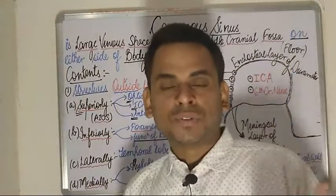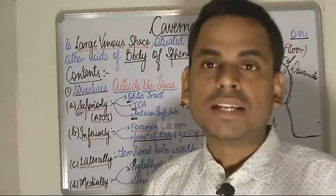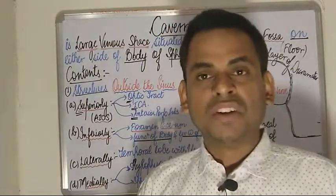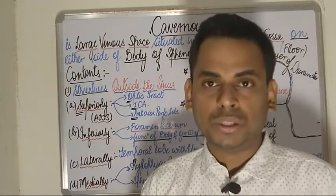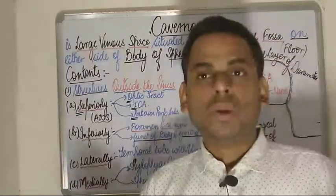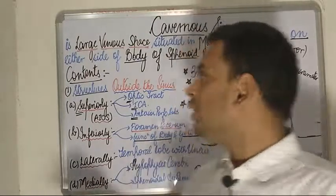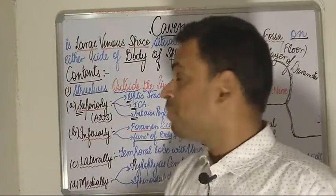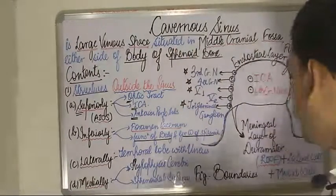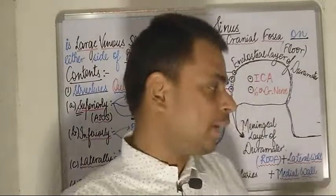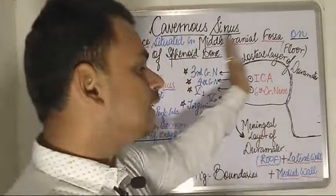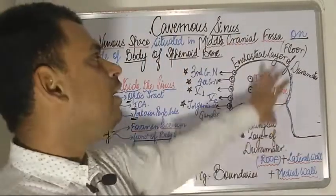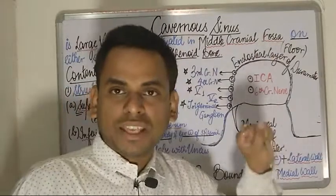The sphenoid bone is the site where the cavernous sinuses are located. These paired dural venous sinuses are located on either side of the body of the sphenoid bone. Now looking at the boundaries of the cavernous sinus — this schematic diagram has been made to simplify the boundaries of the cavernous sinus.